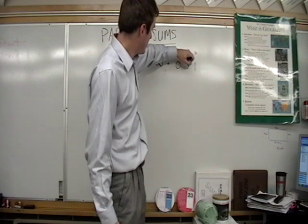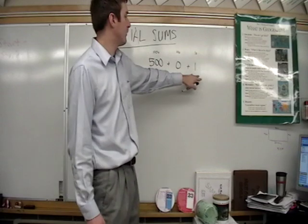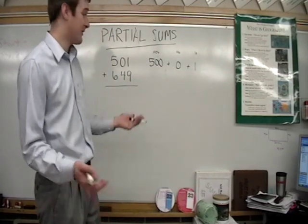So if we add these parts, add the parts, we have 500 plus zero plus one. That will give us 501.